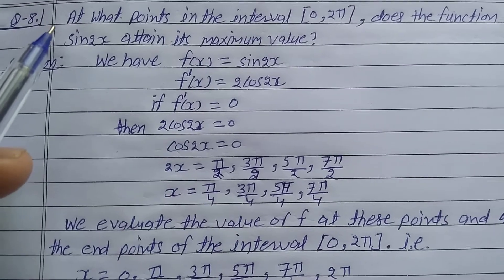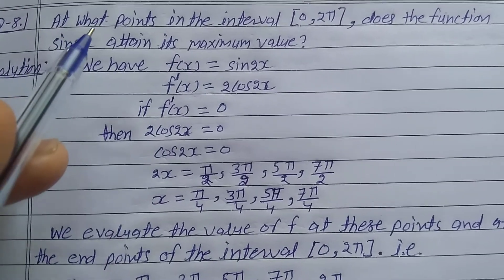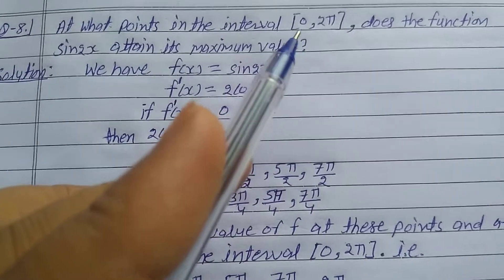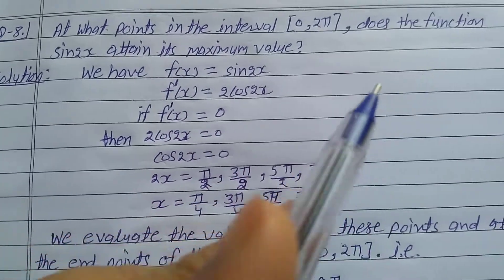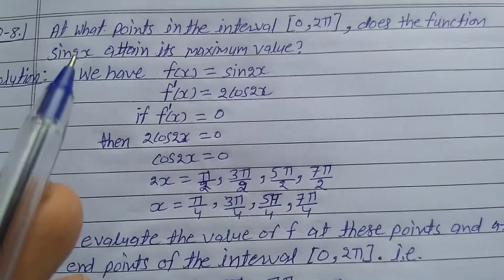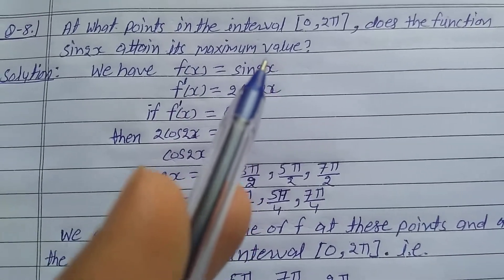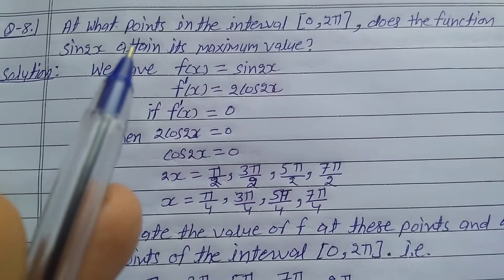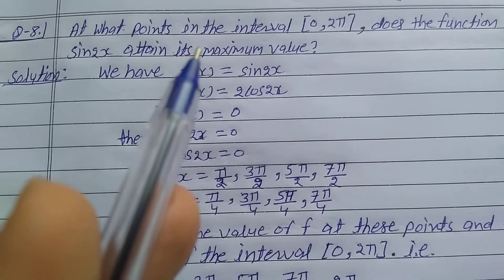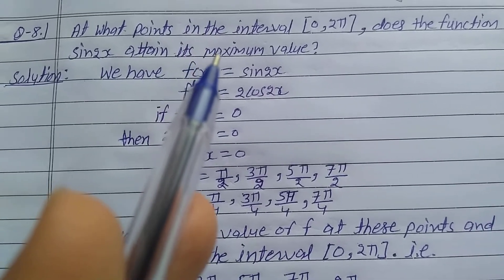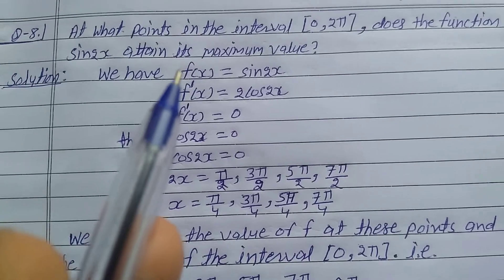Explanation number, Exercise 6.5, Class 12th. At what points in the closed interval 0 to 2π does the function sine of 2x attain its maximum value? We need to find out when, in the interval 0 to 2π, the function has its maximum value.